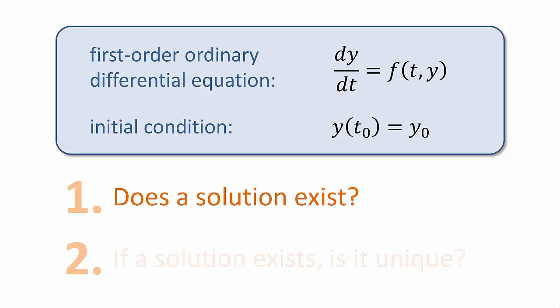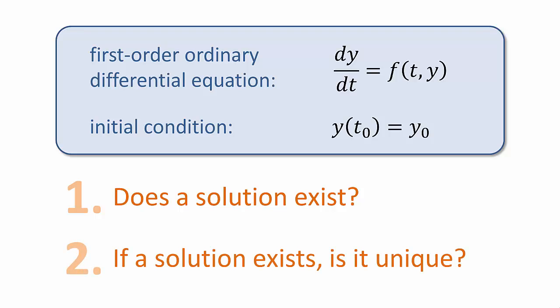Second, if a solution exists, is it unique? This question is important because if this differential equation models a physical system, we need to know that we have a unique solution before using a solution to make a prediction about the system. Otherwise, if there are multiple solutions, how would we know that we have chosen the right one to make the prediction?